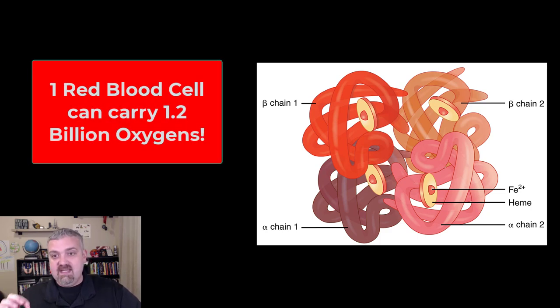Each of these heme units can carry one iron, which means that every hemoglobin can carry up to four atoms of iron at a time.